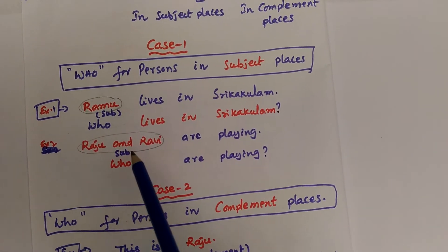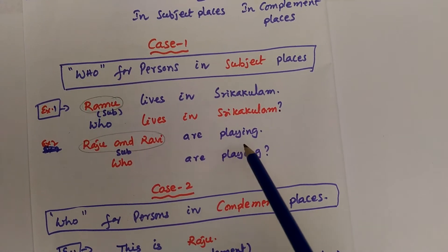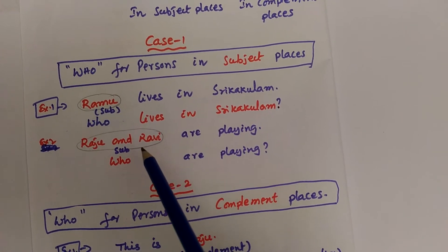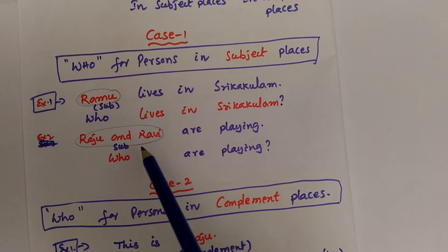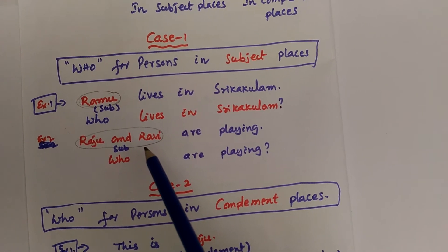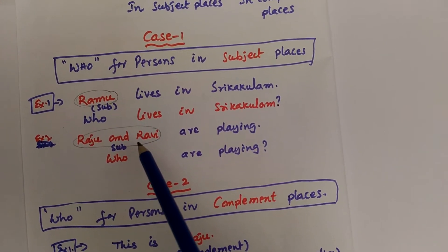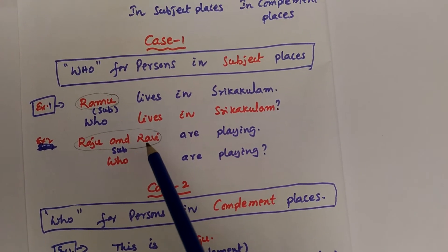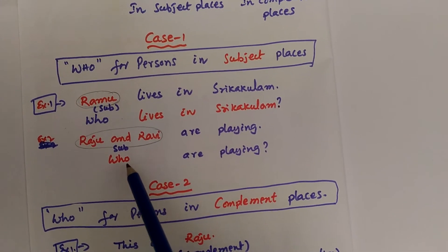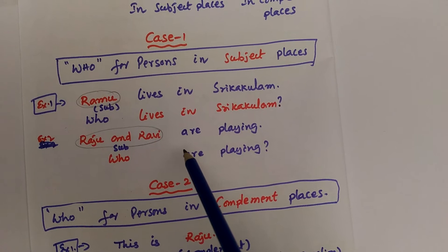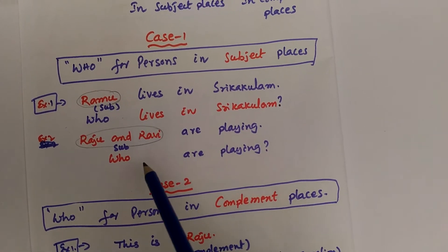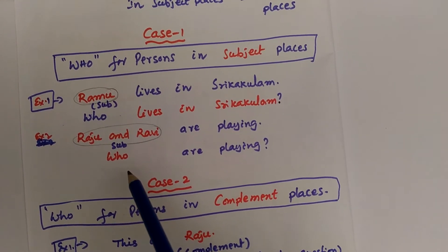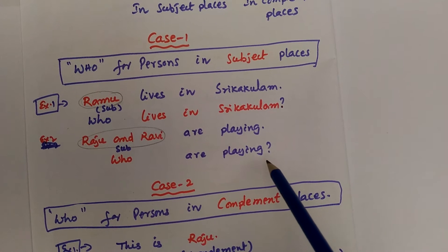Example number two: 'Raju and Ravi are playing.' Here, the phrase 'Raju and Ravi' refers to persons in the subject place. The phrase referring to the persons can be removed and in that place we can make use of 'who'. The verb need not be in interrogative form. So directly we can make use of 'who' in the place of the subject. We get the answer: 'Who are playing?'